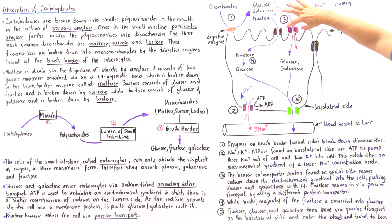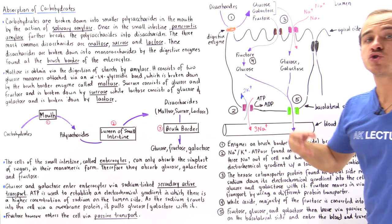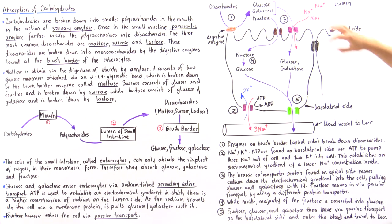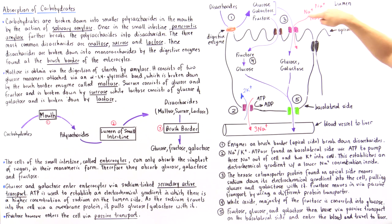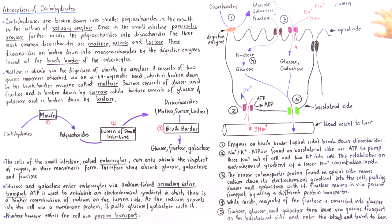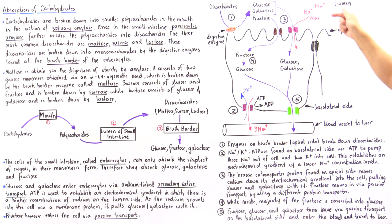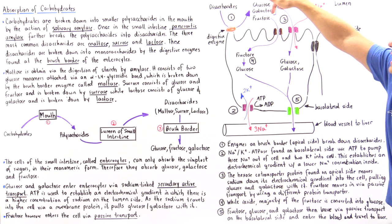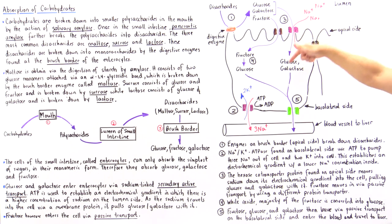We have specialized co-transporter membrane proteins found on the apical side that allow the movement of sodium into the cell. At the same time, glucose and galactose also travel into the cell.